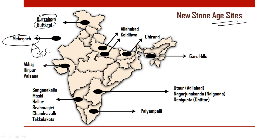Next we have Burjahom and Gufkral in Kashmir Valley. Burjahom is famous for evidence of pit-dwellings — a large number of pits were found at this place — and it is also famous for a double burial system. Next we have Koldihawa and Allahabad in Uttar Pradesh; Koldihawa is famous for the first evidence of rice cultivation. Next we have Chirand in Bihar, which is famous for bone-made ornaments.